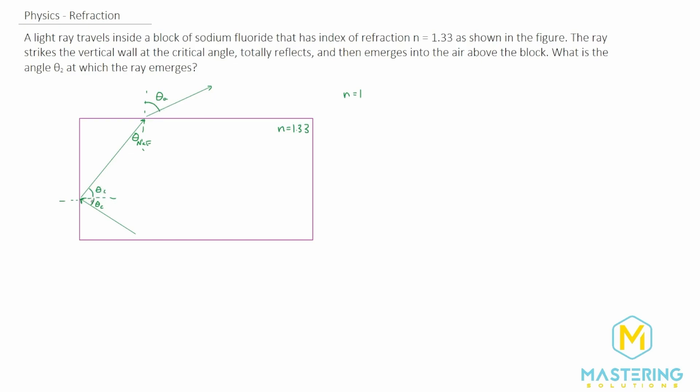We can find this angle here by using the critical angle formula. So that's theta sub C is equal to the inverse sine of N2 over N1. N1 needs to be the one that is the larger N. So we have theta sub C is equal to the inverse sine of one over 1.33.